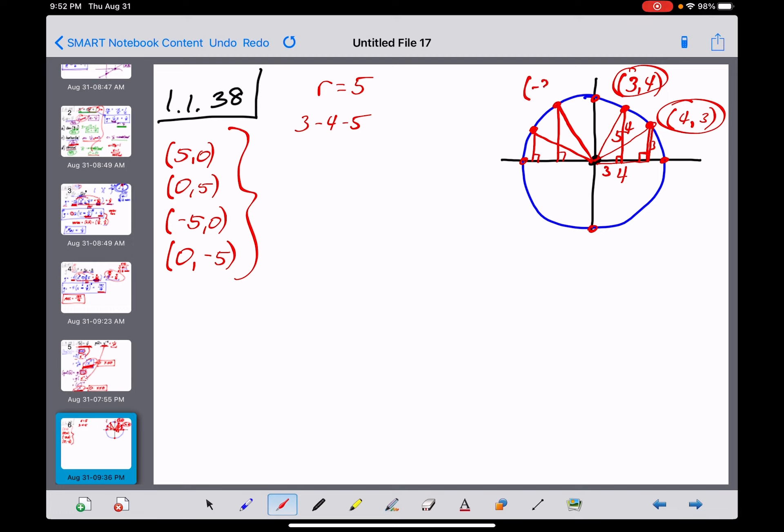This one, if I've got that right, would be (-3,4). And this one over here would be (-4,3).